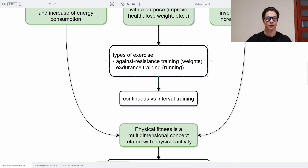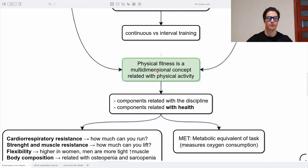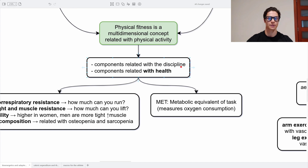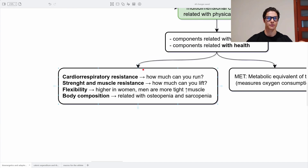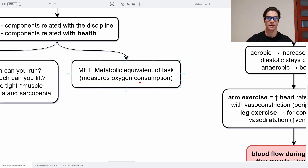There are different types of exercise: resistance training with weights and endurance training such as running, as well as continuous and interval training. Physical fitness is a multidimensional concept related to physical activity, with components related to discipline and health. Key factors include cardiorespiratory resistance — how much can you run; strength and muscle resistance — how much can you lift; and flexibility, which is higher in women because men are tighter due to higher muscle mass. Physical fitness is related to osteopenia and sarcopenia — bone and muscle loss. The MET, or metabolic equivalent of task, measures oxygen consumption in a certain activity and can be used to calculate the energy expenditure of a task.